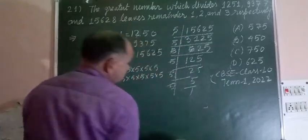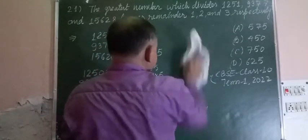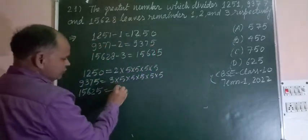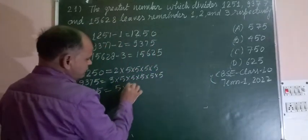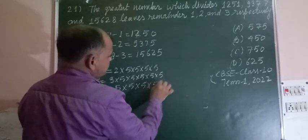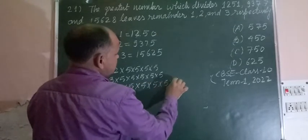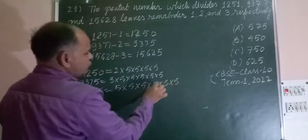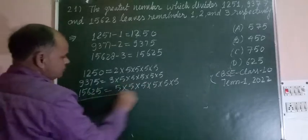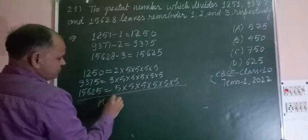15625 is 5 multiplied 6 times, so 15625 equals 5 to the power of 6. Now we find the HCF of 1250, 9375, and 15625.